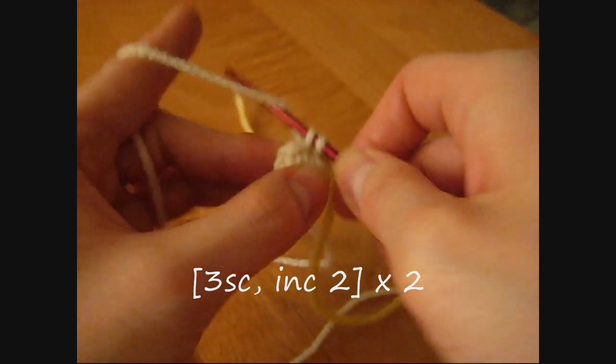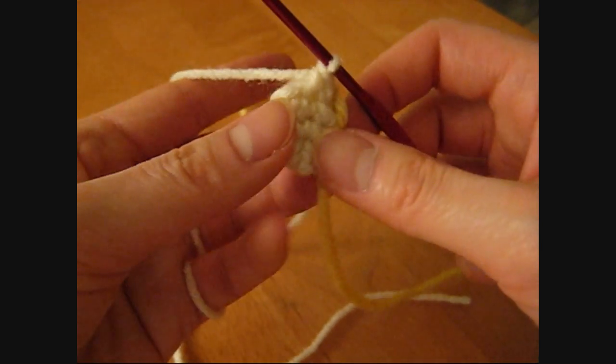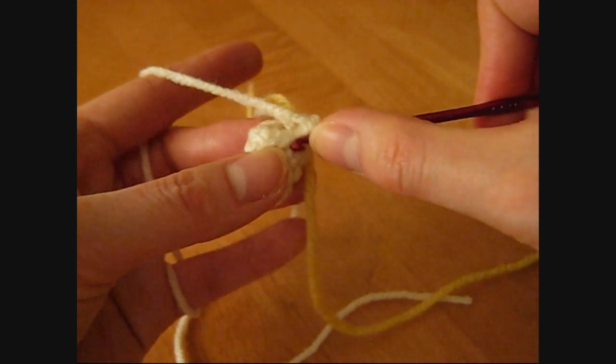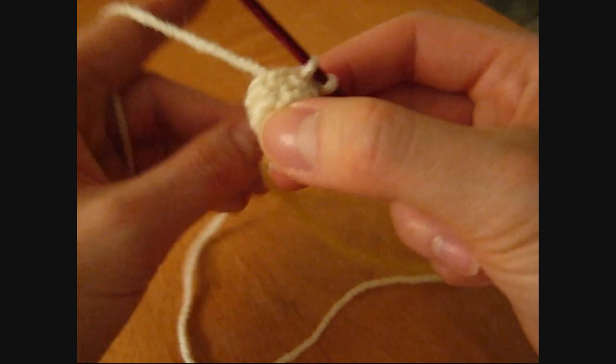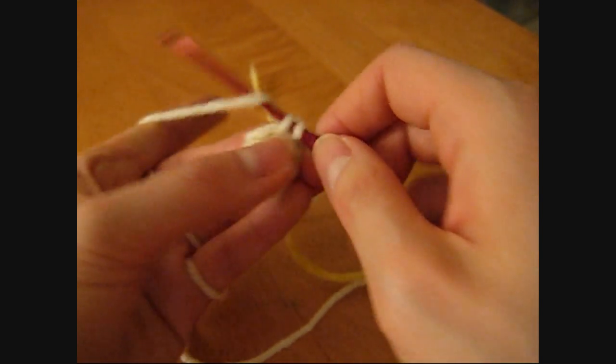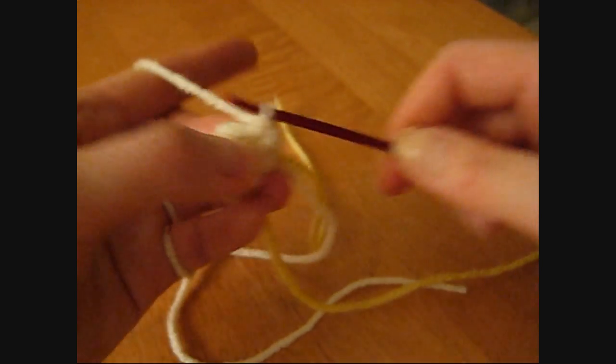Then do 1 single crochet in the 1st, 2nd and 3rd stitch, and 2 single crochets in the 4th stitch. Repeat this sequence 2 times. You should end up with 10 stitches at the end.